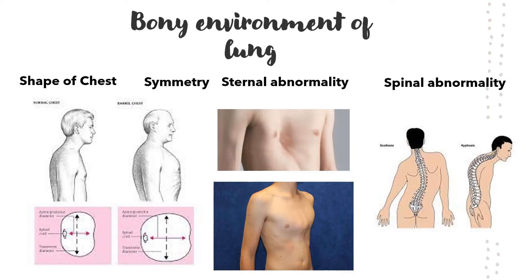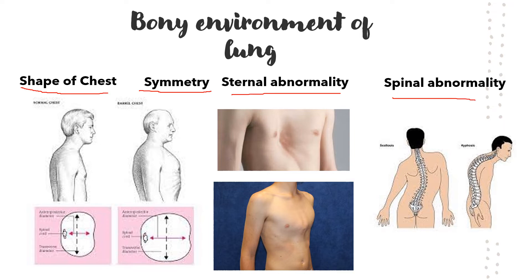The bony environment of the lung will not be affected by consolidation. The shape of the chest will be normal and symmetrical, because consolidation is an acute lesion — symptoms usually present with a duration of less than 10 days. Sternal and spinal abnormality should still be checked as part of routine examination, since mediastinal position can be altered by sternal or spinal deformity. In contrast to fibrosis, which can lead to secondary scoliosis, that secondary scoliosis does not occur with consolidation.